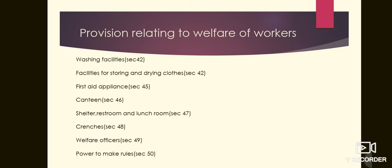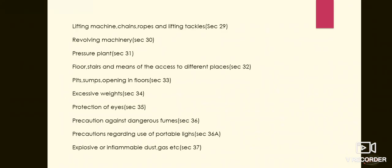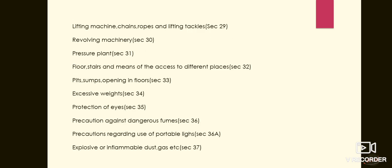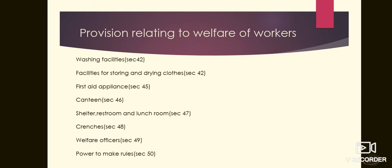The last provision regarding welfare of workers is the power to make rules, in session 50. The state government may make rules exempting, subject to compliance with alternative arrangements for the welfare of workers, any factory or class of factories from compliance with any of the provisions of sessions 42 to 49.